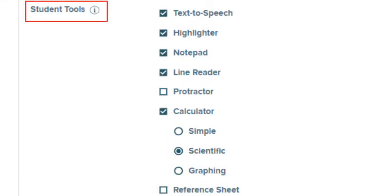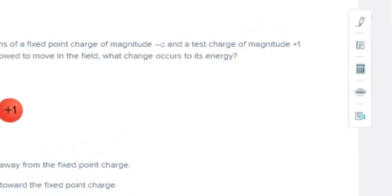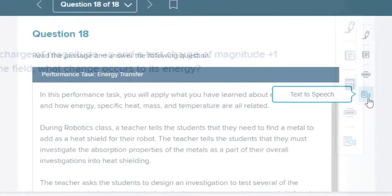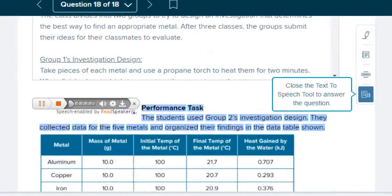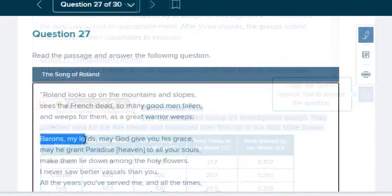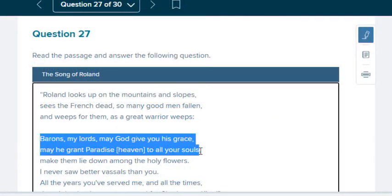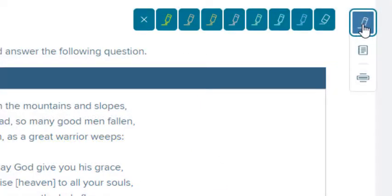Any student tools you select will appear on the right side of the test screen. Text-to-speech plays the audio of the written text. The highlighter lets students highlight particular passages in the text. Students also have the option to choose the color.